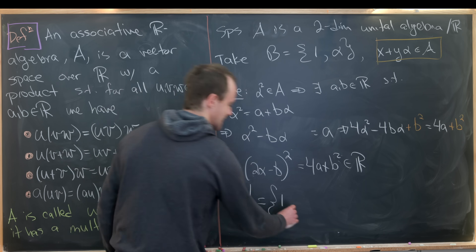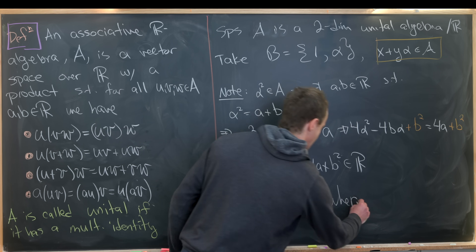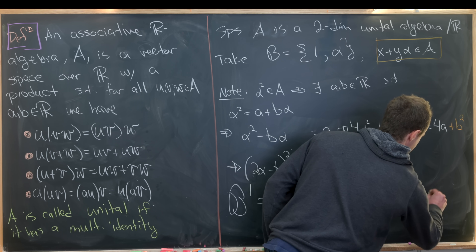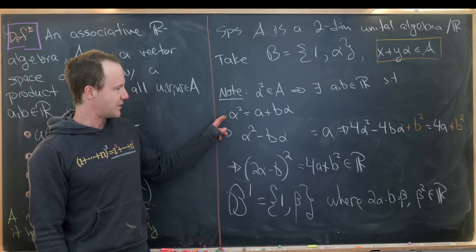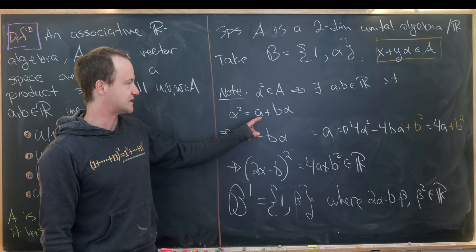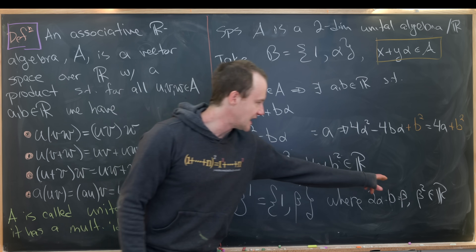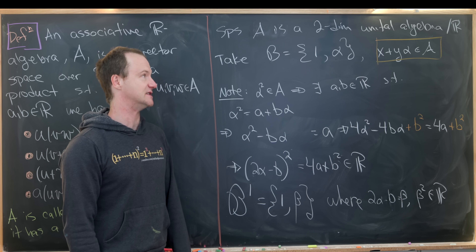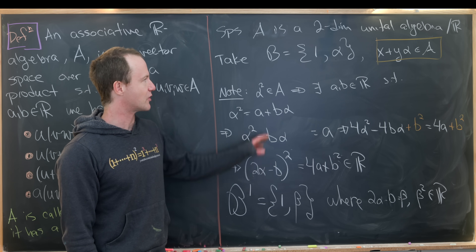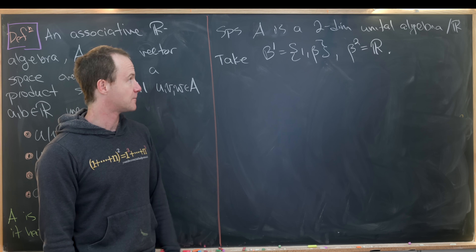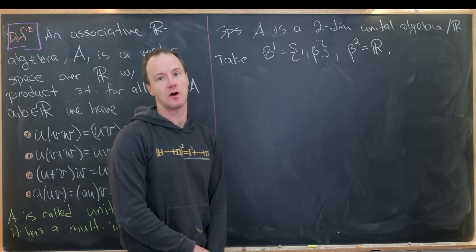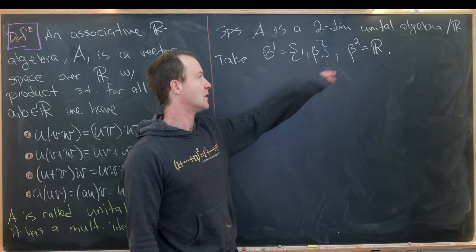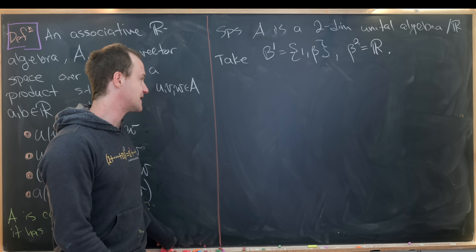We'll name 2·alpha − B equal to beta, where beta² is a real number. So up above, alpha² was a linear combination of both basis elements, but after this change of basis, beta² squares to something that's purely a real number — a little easier to deal with. So to summarize where we are: we have a two-dimensional unital algebra over R with a basis {1, beta} where beta² is a real number. Now we'll break this into cases.